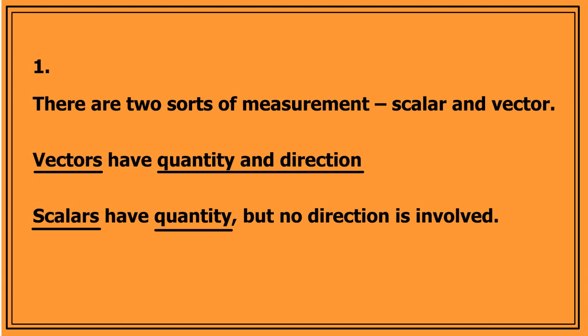And finally, let's take a quick look at the points we have covered in these two introductory videos. Number one, there are two sorts of measurement, scalar and vector. Vectors have quantity and direction, whereas scalars have quantity, but no direction is involved.